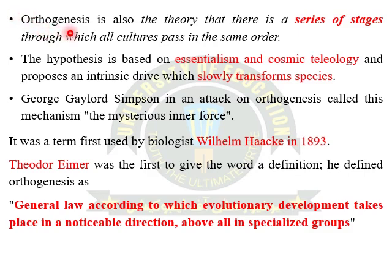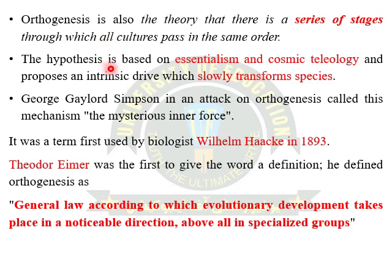Dear students, orthogenesis is a theory that tells us the series of stages through which all cultures passed in the same order. Simply, the offspring have characters of their parents that were developed in their life stages. Orthogenesis is a hypothesis based on essentialism and cosmic teleology, proposing an intrinsic drive which slowly transforms into species.